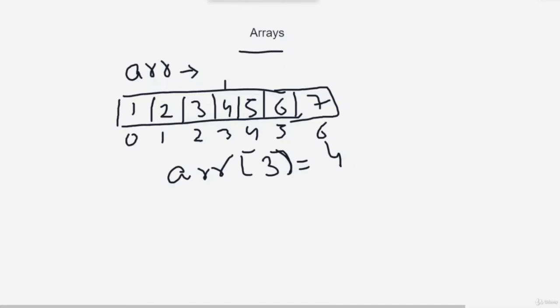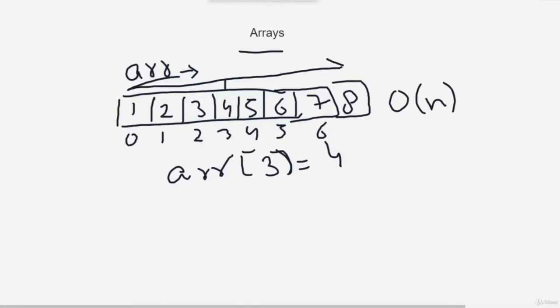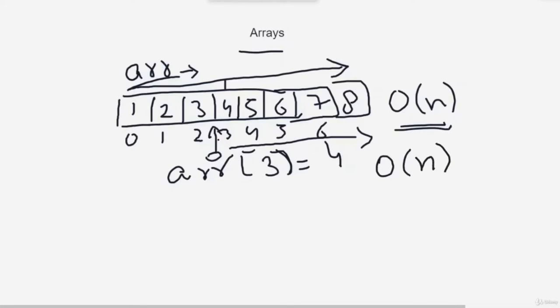Another advantage of arrays is that they can represent multiple data items using one name. Arrays are generally of fixed size, but languages like Java and Python provide resizable arrays — you can use the append function to add an element at the end. Adding an element takes O(n) time because you have to traverse the whole array first. Even adding in the middle requires shifting all elements to the right, which also takes O(n). Traversal likewise takes O(n) time.